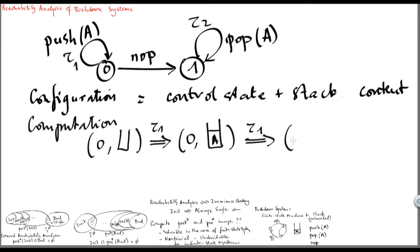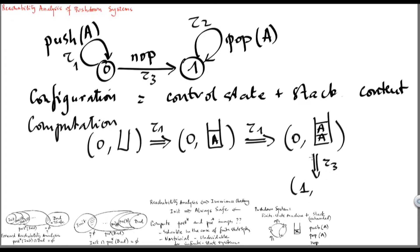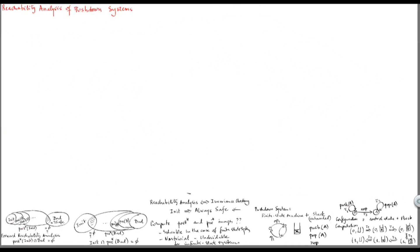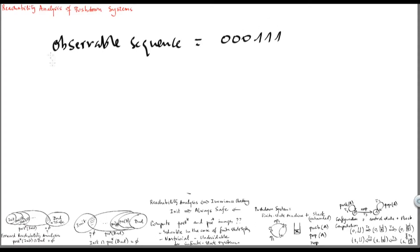Again, we can apply tau1 once more to get state 0 with two A's on the stack. Now we can decide to apply transition tau3 and go to state 1; since the operation is NOP, the stack has not changed. Now we can apply tau2: we stay in the same state but remove one A. Then we apply tau2 again to reach configuration 1 with empty stack. The observable sequence of states is 0 three times followed by 1 precisely three times.